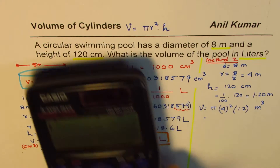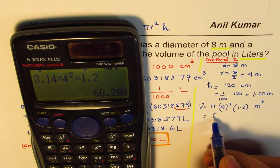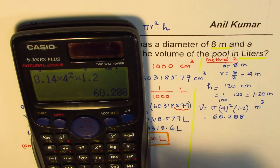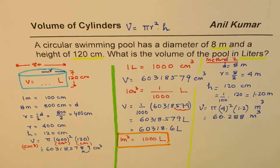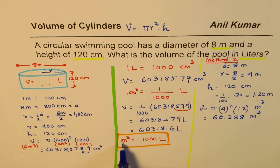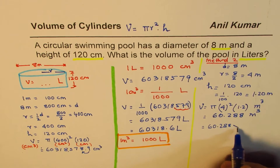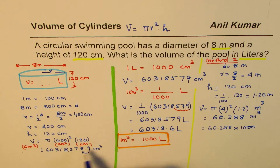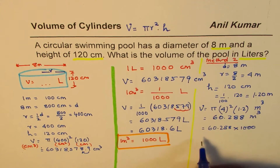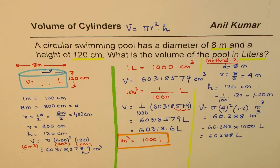Let's use the calculator once again. Using 3.14 times 4 squared times 1.2 equals — we get the number 60.288 meter cube. Do you see this is a more manageable number? Sometimes we may prefer to write bigger units. Now 1 meter cube is 1,000 liters, so this could be written as 60.288 times 1,000, which gives us 60,288 liters.